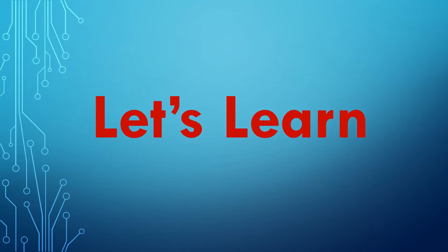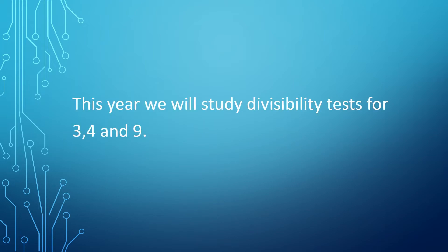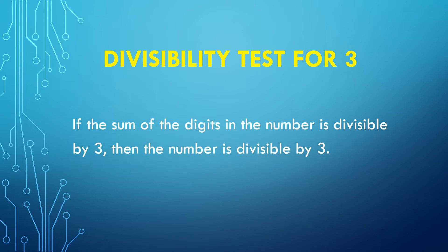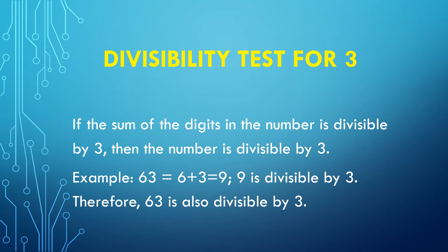Let's learn. This year we will study the divisibility test for 3, 4, and 9. Divisibility test for 3: if the sum of the digits in the number is divisible by 3, then the given number is divisible by 3. For example, 63 has two digits, 6 and 3. When we add those digits — 6 plus 3 — the answer is 9. Since 9 is divisible by 3, therefore 63 is also divisible by 3.